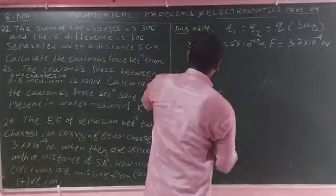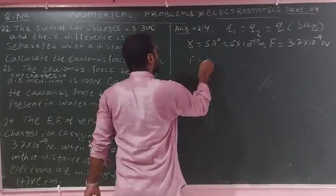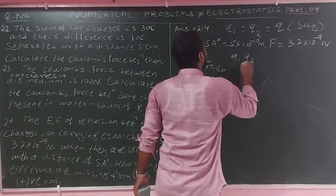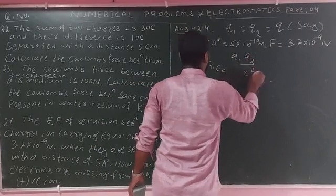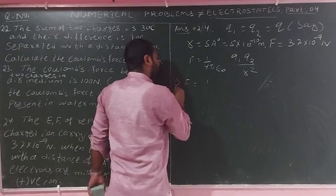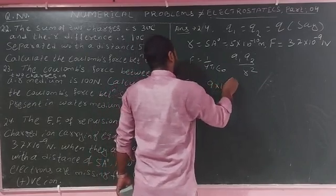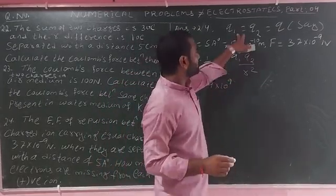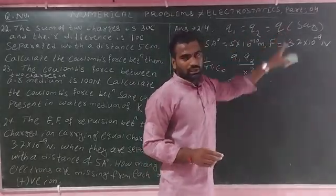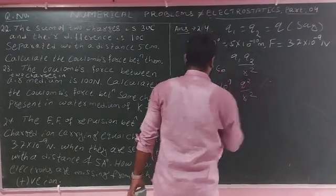The Coulomb's force formula is: F equals 1 over 4 pi epsilon-zero times Q1 times Q2 over R squared. Since Q1 equals Q2 equals Q, this becomes F equals 9 times 10 to the power 9 times Q squared over R squared.